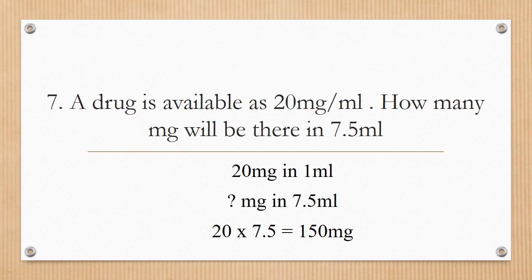Next question: a drug is available as 20 milligrams per milliliter. How many milligrams will be in 7.5 milliliters? In one milliliter we have 20 milligrams, so 20 × 7.5 = 150 milligrams.